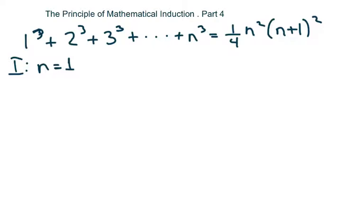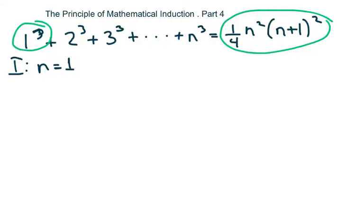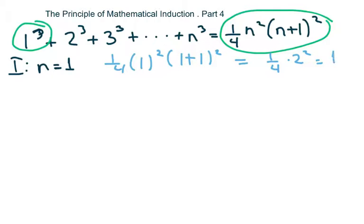We're going to check condition one, for n equals one. We plug in one in this section and it should equal one cubed, which is one. So plugging in one everywhere, we get one-fourth times one squared times (one plus one) squared, which equals one-fourth times two squared, which is four — so that all equals one. It checks.